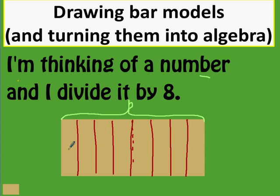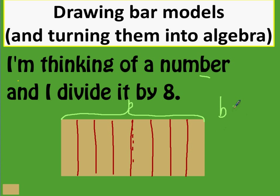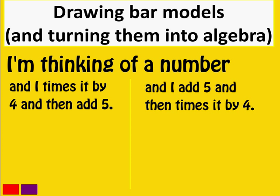I shouldn't write 8 in each of the sections because I don't know what those sections are worth — I have no idea because I don't know what B was to start with. In terms of algebraic expressions, you can write this as B divided by 8, or as B over 8, or as B times one over 8. My preferred form is B over 8, as it clearly shows B is being divided by 8.